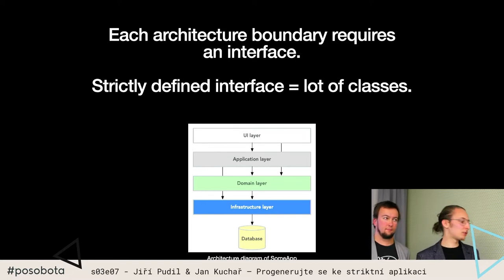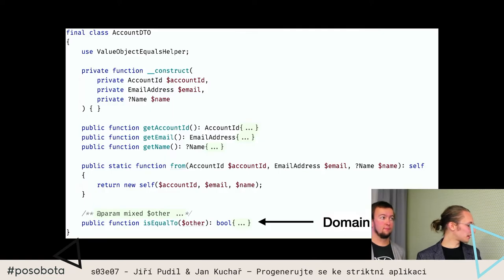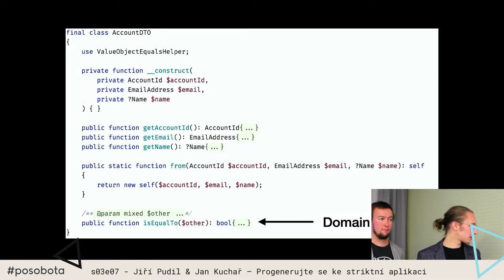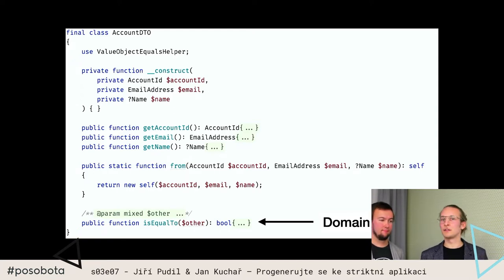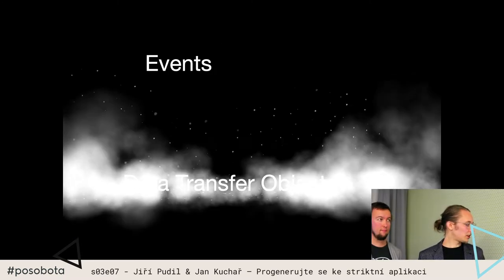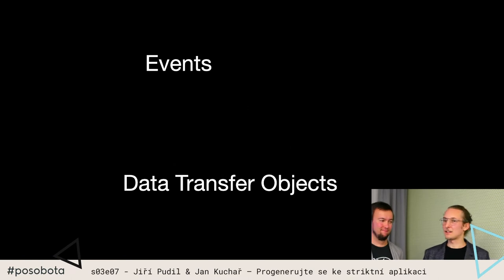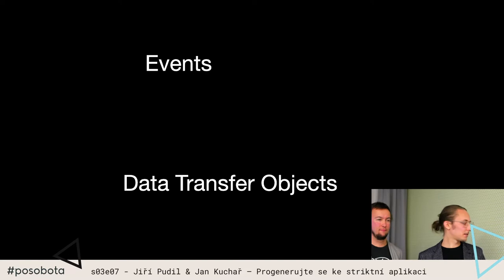Aby jste to zase nemuseli psát ručně, no, to je ten scaffolder - protože když se na to podíváte, tak to vypadá zase dost obdobně jako ty eventy. Máme tady zase konstruktor, zase getry, nějaký pojmenovaný konstruktor from, a tady je dokonce kousíček doménové logiky, která říká, jaké dvě DTO jsou si rovny - metoda is equal to. Takže to je další věc, která dává smysl taky nějak negenerovat ručně.